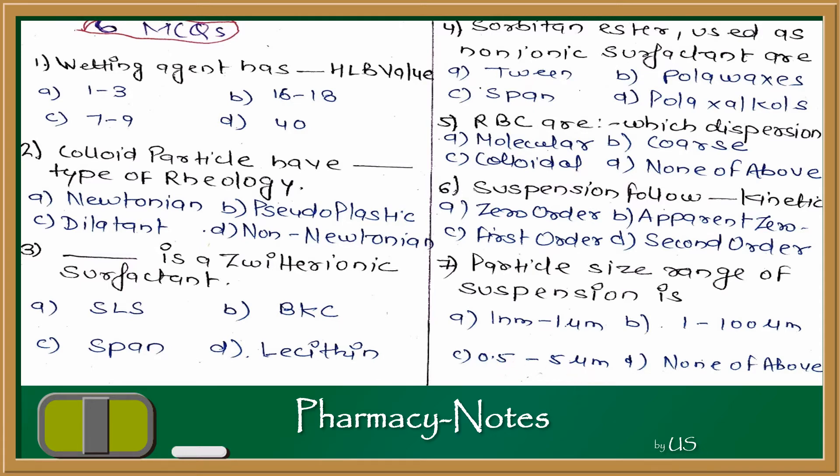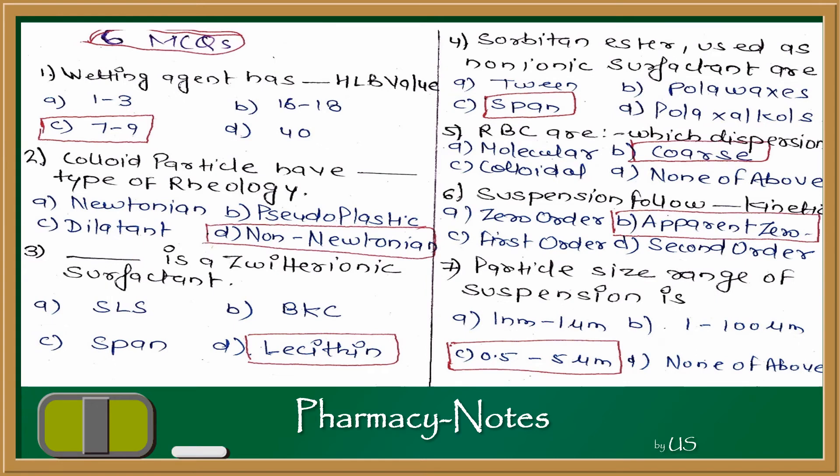Let's check. The answer is 7-9, Non-Newtonian, Lecithin, Span, Coarse dispersion, Apparent zero - sorry - Apparent zero order, 0.5 to 5 micrometer. Let's solve some other questions.